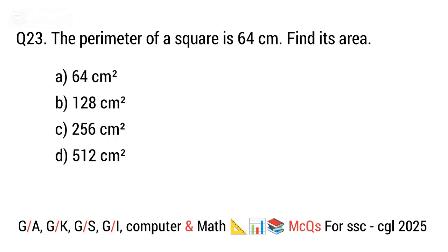Question 23. The perimeter of a square is 64 centimetres. Find its area. The right answer is option C. 256 centimetres squared.